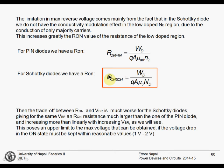For a Schottky diode, we only have the doping, which is around 10^14 to 10^15. This means the resistance will be roughly 100 times larger than the PIN diode. For the same breakdown voltage, the on-state resistance tends to be much larger for Schottky diodes.